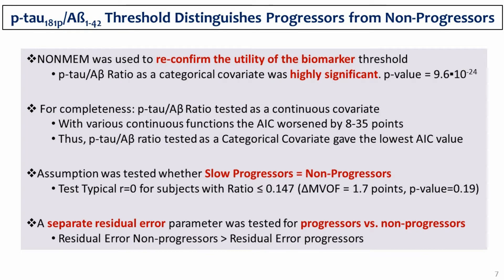The inclusion of biomarkers led to a huge improvement in model performance. Two additional tests were performed during the biomarker analysis. The first tested the assumption whether the progressors with slower progression rate represented non-progressors — this assumption was found to be true, suggesting that the CSI biomarkers distinguish progressors from non-progressors. Secondly, it was found that residual error for non-progressors was greater than that for progressors, suggesting that studying MCI subjects with pathologic biomarkers has the potential to reduce heterogeneity in prodromal AD trials.